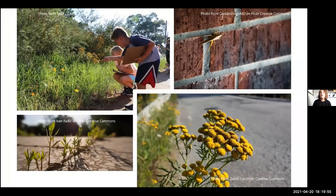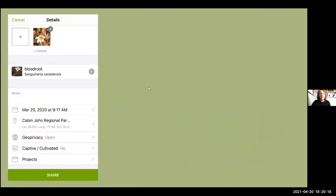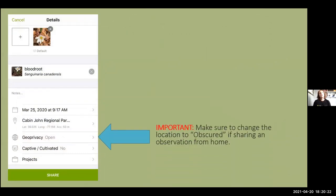As for where to go, any green space works — a schoolyard, your favorite park, downtown areas, or your own backyard. One more setting to be aware of: the geoprivacy setting. If you're uploading observations from your own backyard or place of work, I strongly suggest changing the geoprivacy to 'obscured' — it will show only the general location, usually county and state, not an exact address, which protects your privacy.